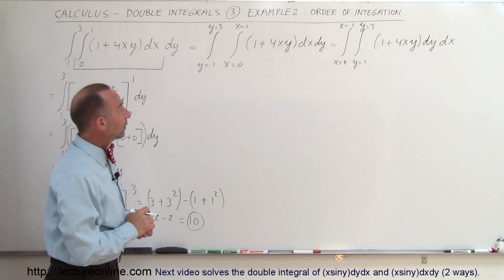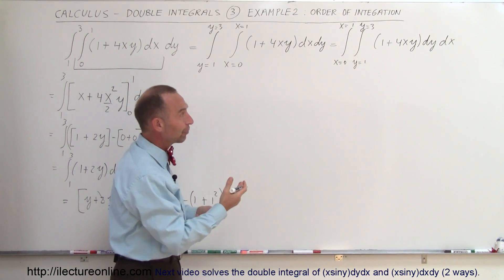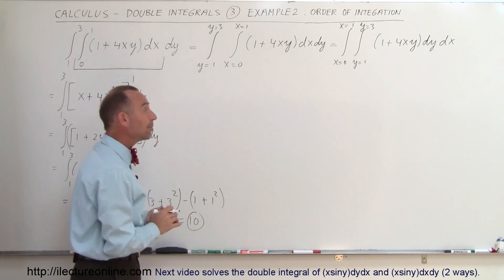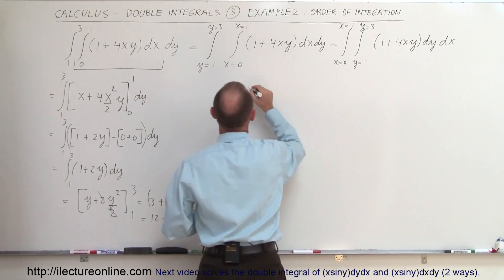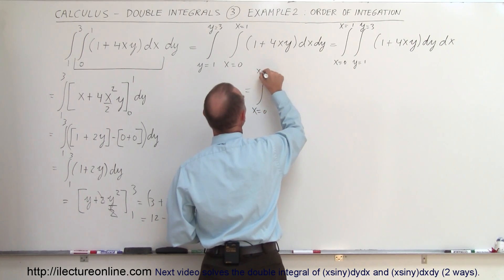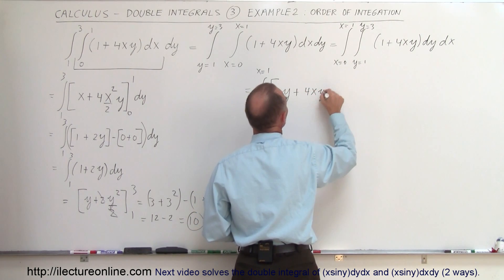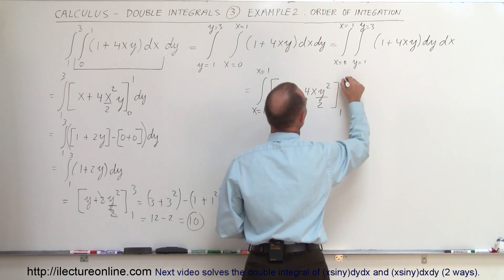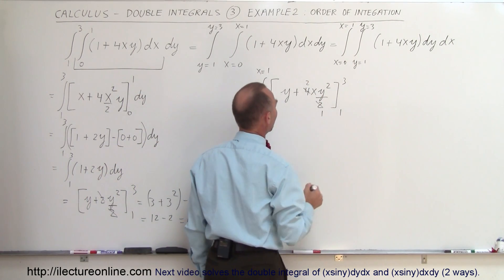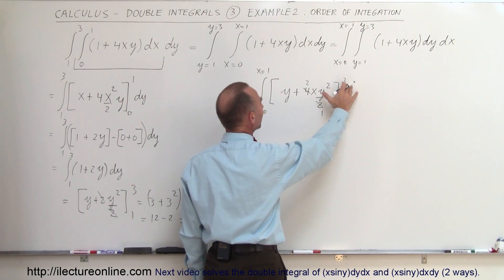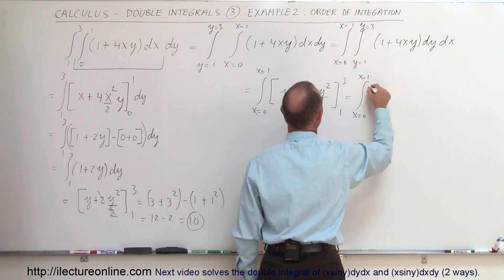Now let's integrate it again but reverse the order of operation — integrate over y first, then over x — and we should get the exact same answer. So first we integrate using y as the variable. This becomes the integral from x equals 0 to x equals 1 of: integrating over y, we get y minus 4x times y squared over 2, evaluated from y equals 1 to y equals 3. We can simplify the coefficient: the 4 over 2 becomes 2.